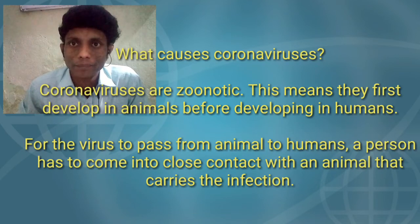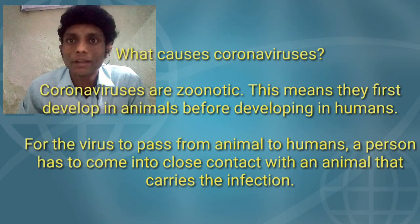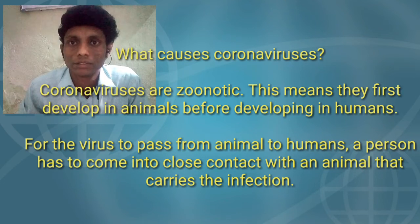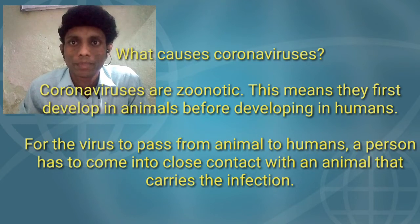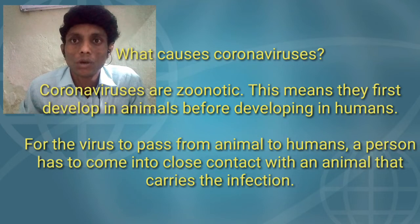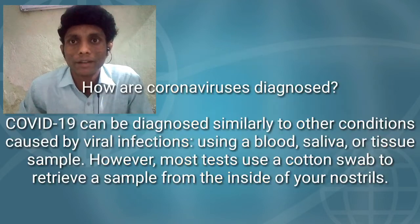What causes coronaviruses? Coronaviruses are zoonotic, meaning they first develop in animals before developing in humans. For the virus to pass from animal to humans, a person has to come into close contact with an animal that carries the infection.